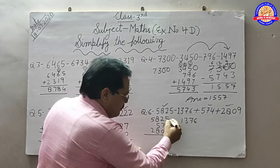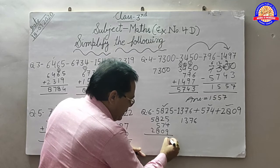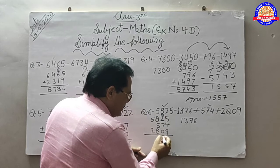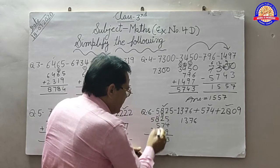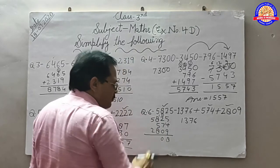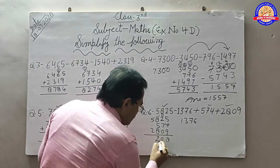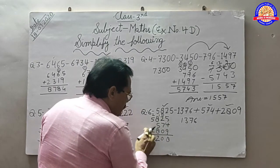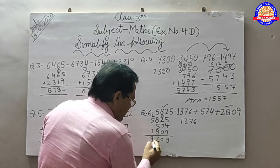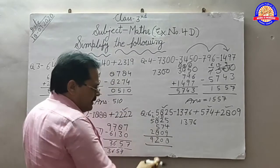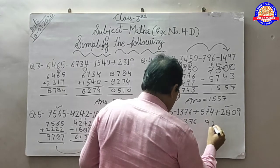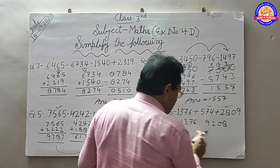इनको plus करेंगे: 4, 5, 9, 9 makes 18. Write 8, carry 1. 7, 2, 10, carry 1 makes 11. Then 7, 2, 9, 1 makes 10. Write 0, carry 1. 8, 8 makes 16, then 17, and 5 makes 22. Result: 9, 2, 0, 8. इस नम्बर को ऊपर लिखेंगे.